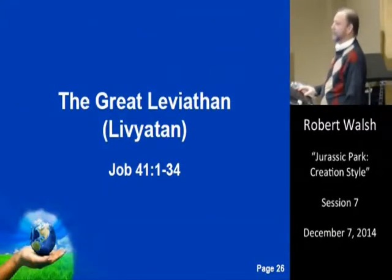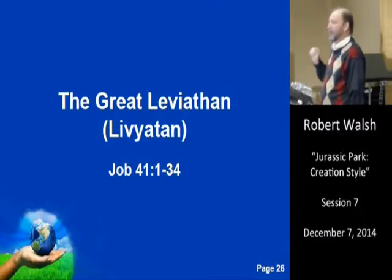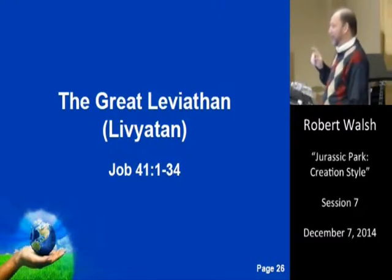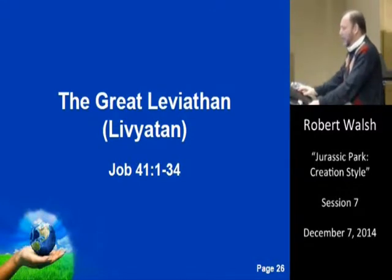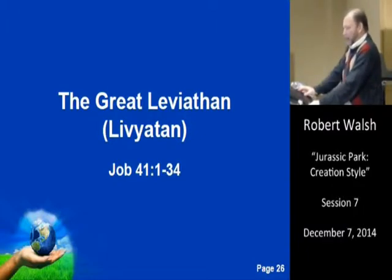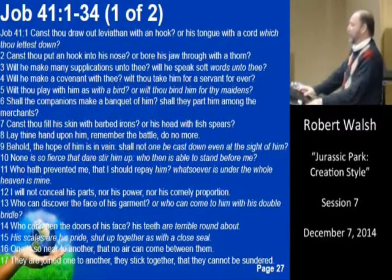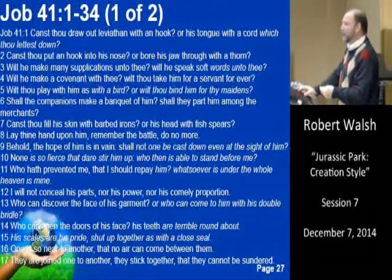Let's look at the great Leviathan. There are many works in economics that refer to Leviathan — and there's a reason for that, which we'll see shortly. The great Leviathan is seen in Job 41, verses 1 through 34. It comes from the Hebrew word 'Livyaton.' Notice the context of Job: God is challenging Job — 'I made these creatures, and you can't even kill them, let alone capture them. Who are you?'